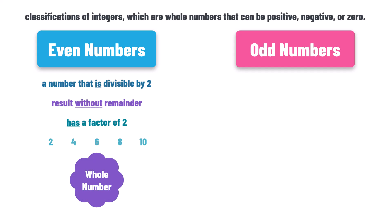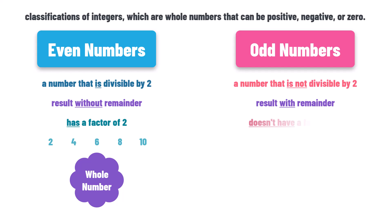Let's check the second definition: odd numbers. An odd number is a number that is not divisible by 2. This means it cannot be divided by 2 without leaving a remainder. In other words, if we divide an odd number by 2, we don't get a whole number, but a decimal number. So, an odd number is a number that doesn't have a factor of 2.